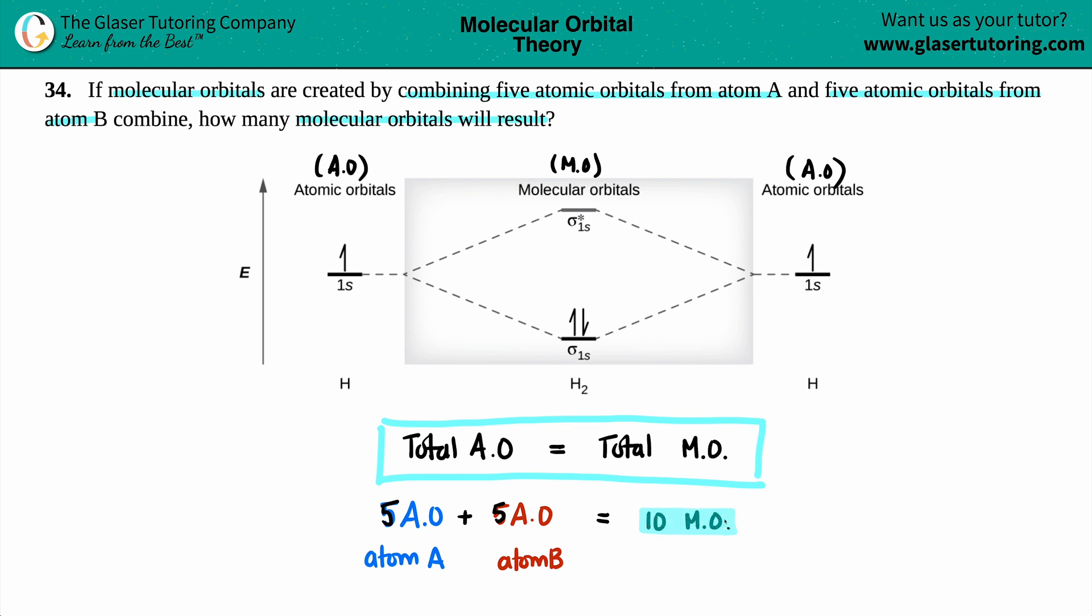So it's just the addition, the sum of how many total atomic orbitals. So basically, just to put it into perspective, you would have five lines on both sides, and then you would have 10.